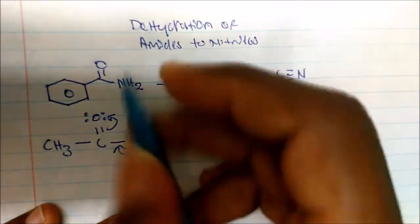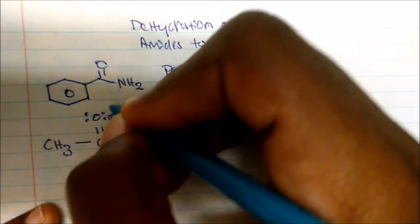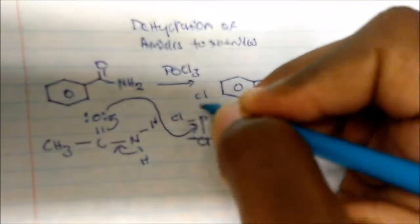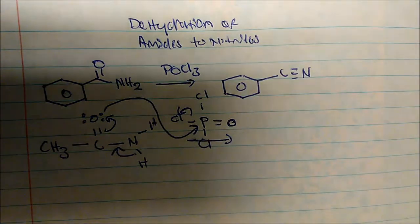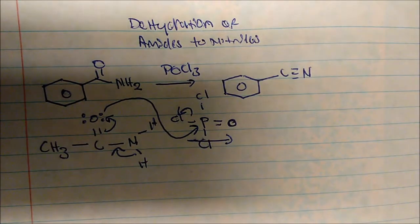And simultaneously, these same pi electrons, these same lone pairs that are kicked off on the oxygen now, will actually attack the phosphorus atom. And once you attack the phosphorus atom, you're going to displace one of the chlorines. So this all happens in one step.